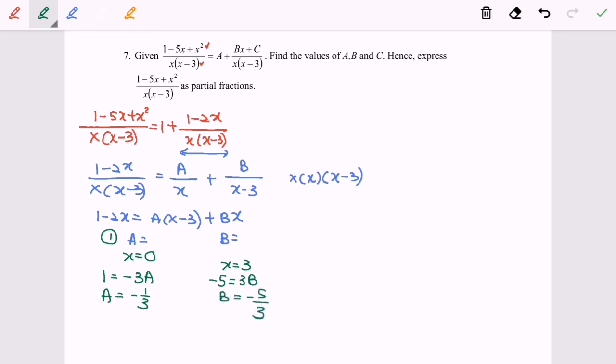So now I'm going to substitute the value A and B into the fraction. So my final answer, 1 minus 5x plus x square over x, x minus 3 will be equals to 1 negative 1 over 3x negative 5 over 3x minus 3. So this is how I decomposite the fraction.